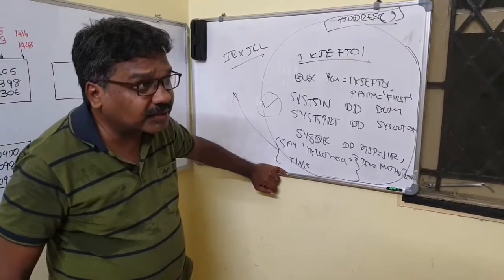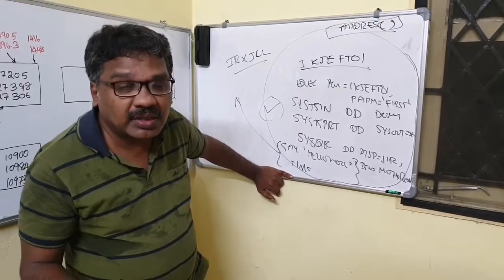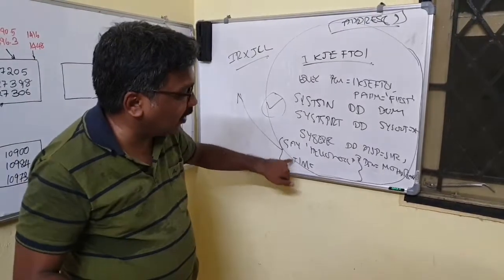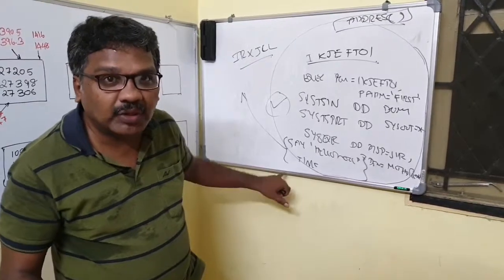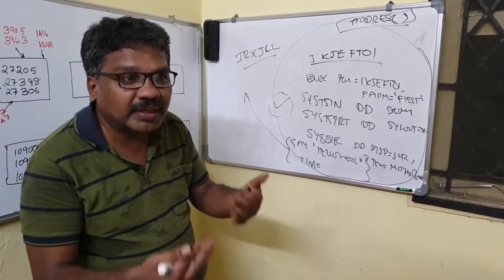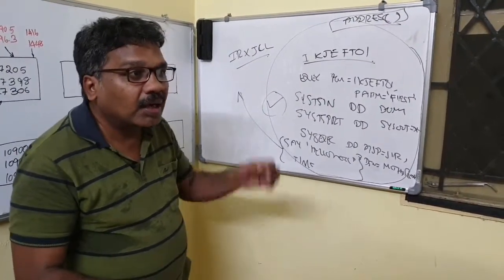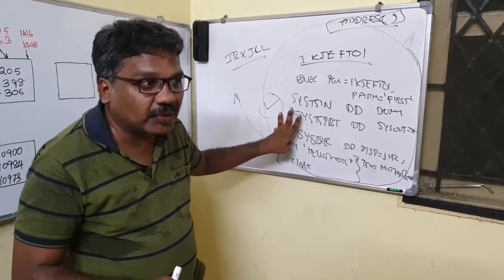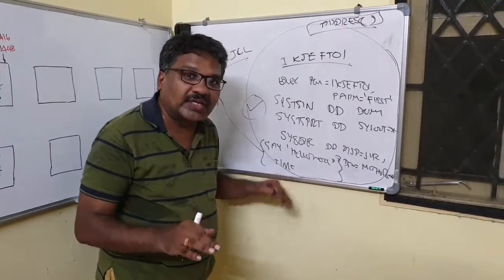But the same code when we are executing using IRXJCL, the TIME will go to MVS. Again, MVS also TIME is not an understandable command, so this command will fail. But in case of IKJFT01 way, the TIME will get the time at that time, you will get the output. The same is applicable in explicit way also because explicit way also your ISPF, when REXX is running, it is running under TSO.